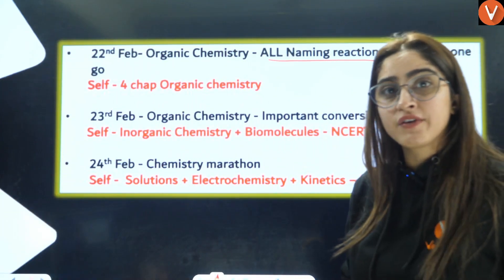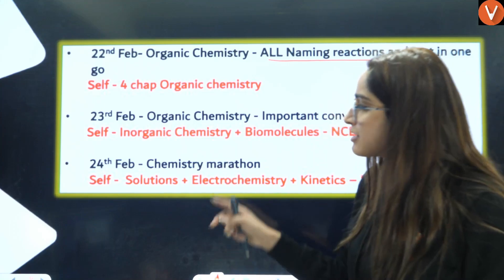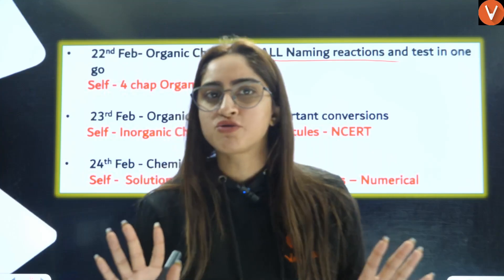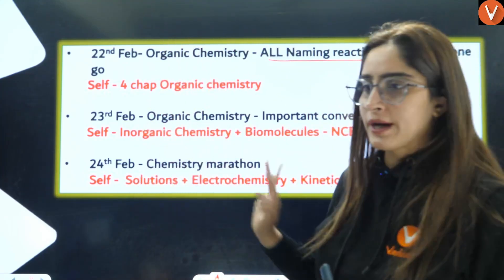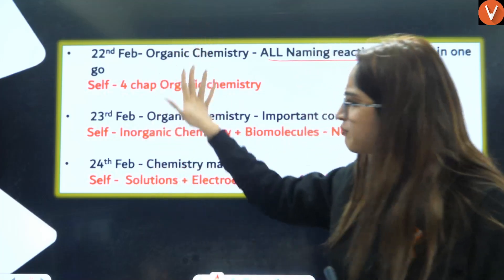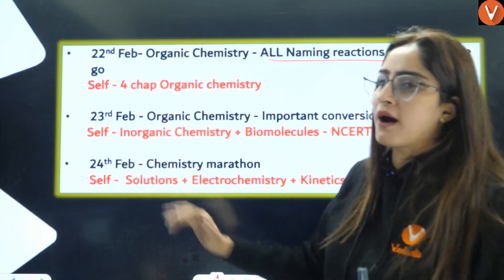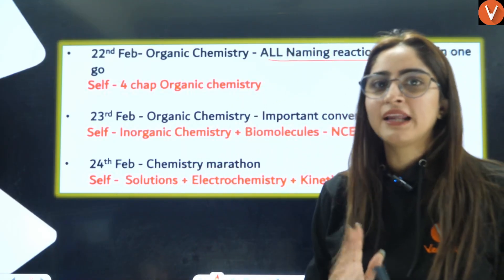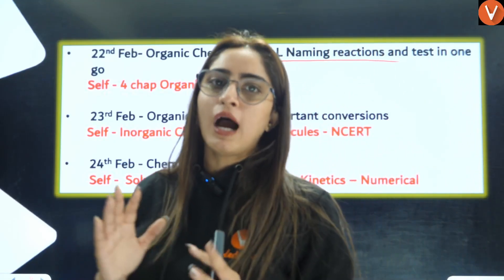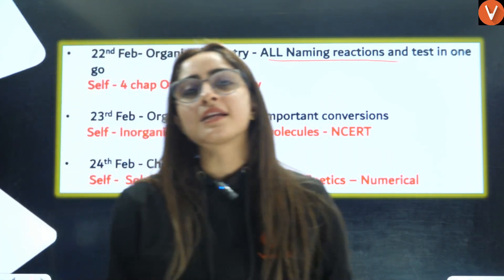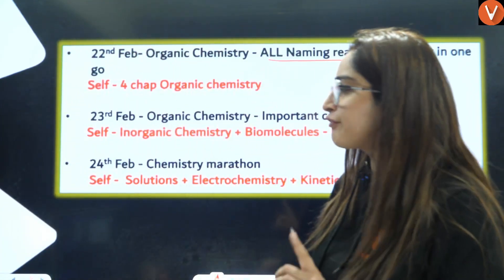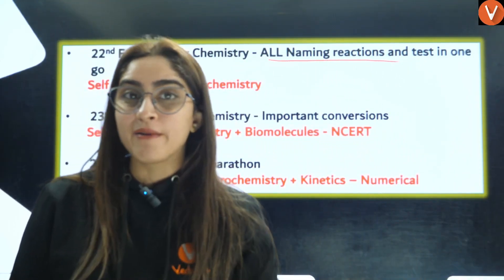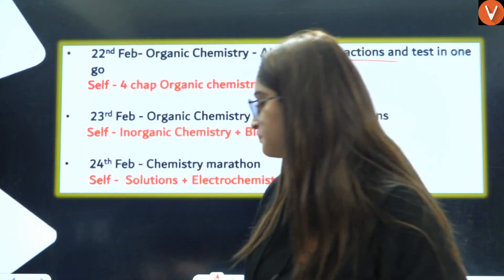Once you are done with this, that means you have completed a full revision of your chemistry exam. This was the most important part. Most students only reach this stage by the 26th or even the 5th — that's why they say they worked hard but didn't top. The reason is they didn't do enough practice. So 25th and 26th are going to be for practice, addressing weak points, time management, and presentation skills.